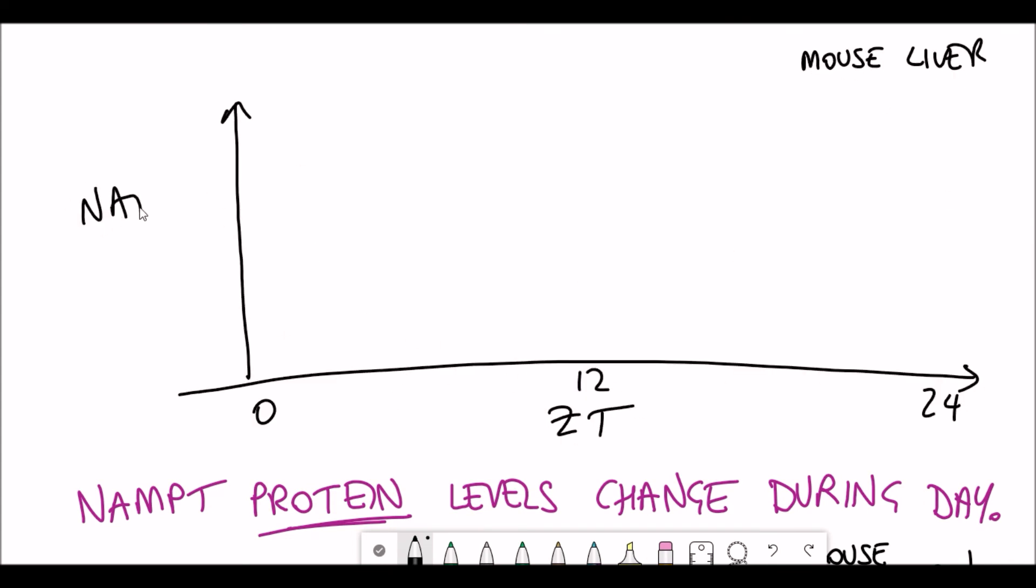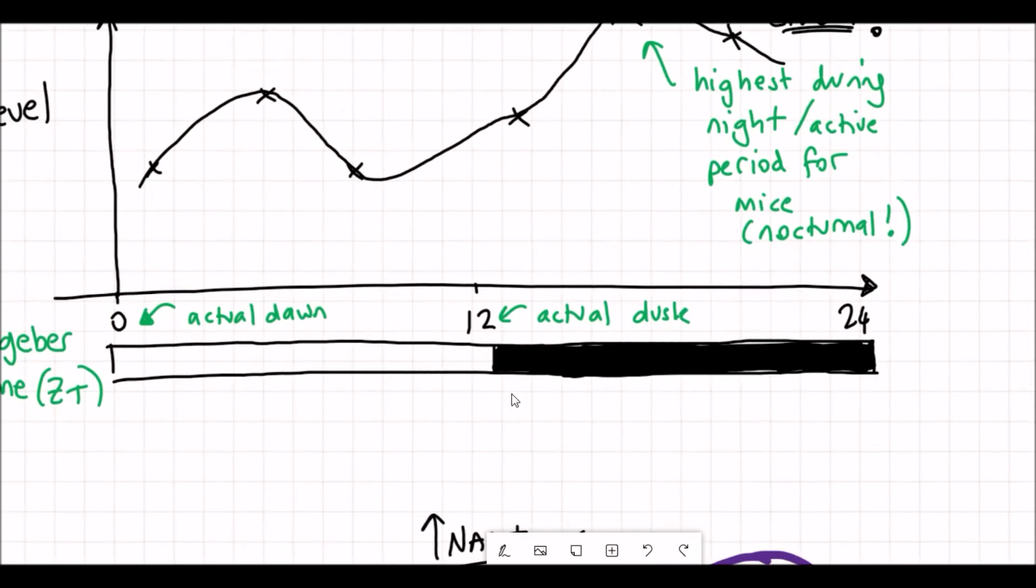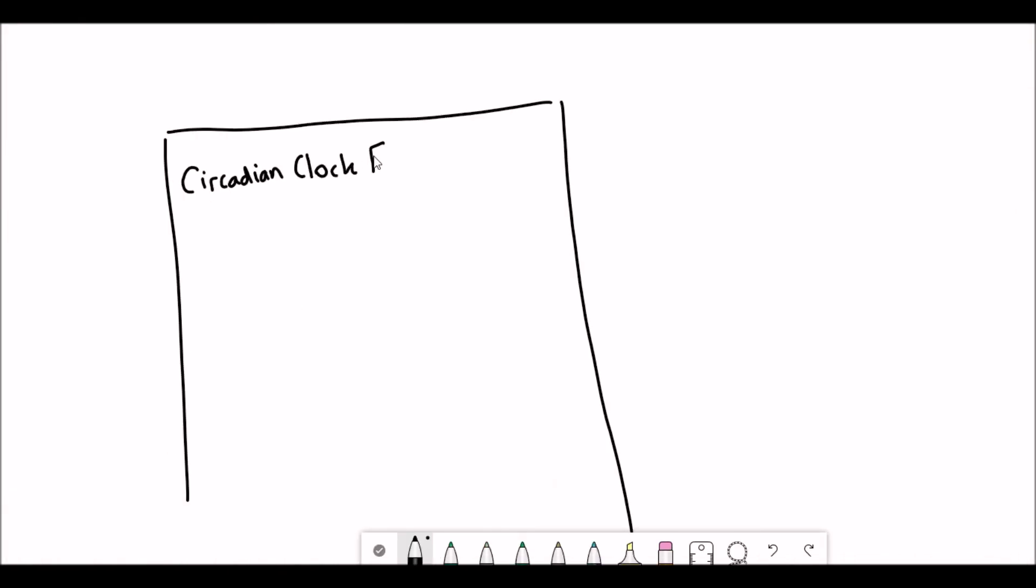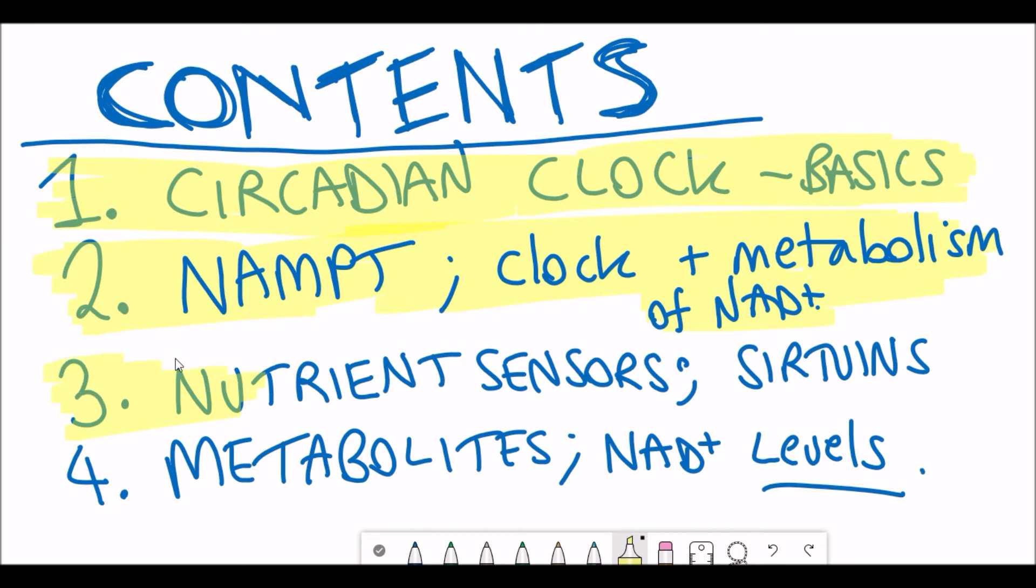So that kind of makes sense. So how do NAD+ levels fluctuate in this mouse liver? Well, they pretty much mirror what happens with the NAMPT levels, which basically shows that this fluctuation in NAMPT will also alter the synthesis of NAD+. So we can see that NAD+ levels fluctuate.